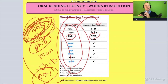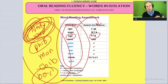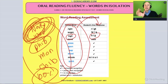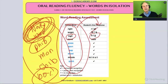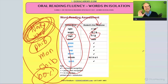Reading real words in isolation is also a phonics assessment, but there's a chance the student could self-correct — for example, they might say 'rig' and then fix it to 'right.' The teacher would have to mark that as a self-correction, because the student heard that it didn't sound right and fixed it.